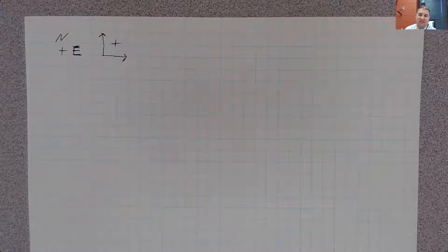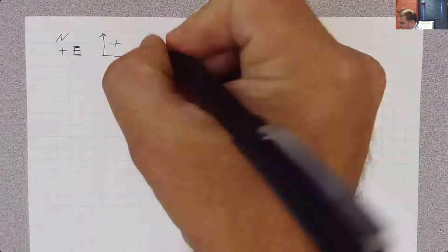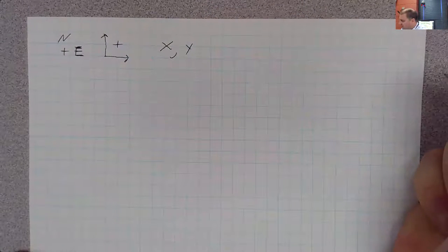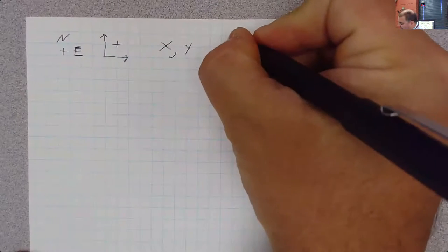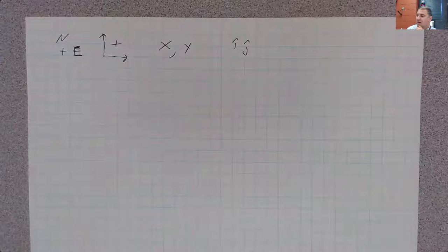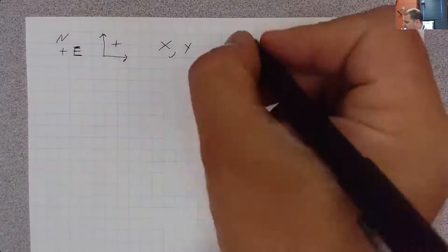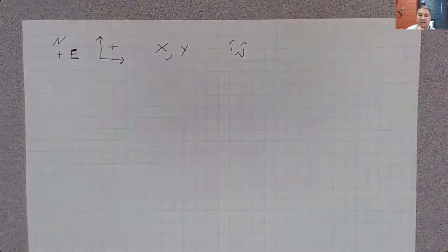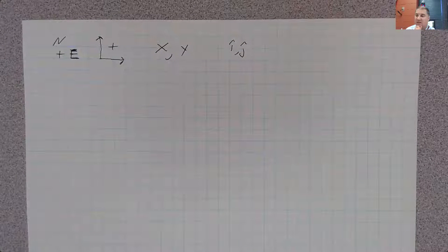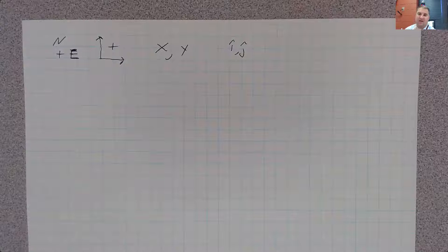You could see these described as X and Y vectors. Sometimes those might get turned into I hat and J hat vectors. You'll see that in math class and higher levels of physics if you're going into engineering. But let's just use north and east for now.